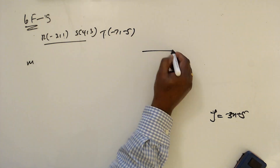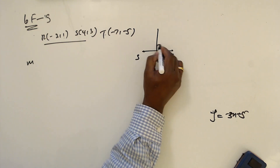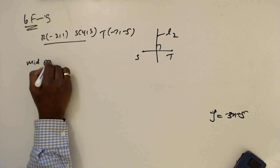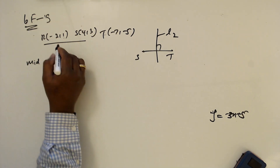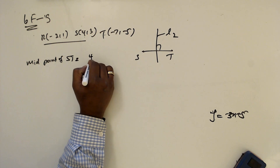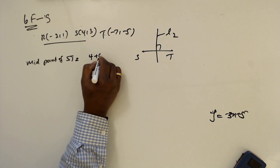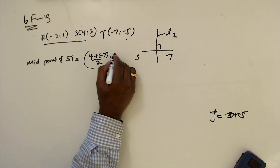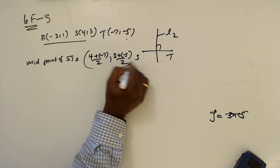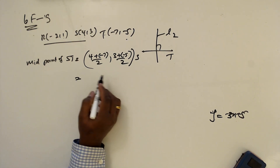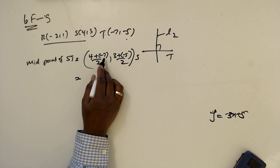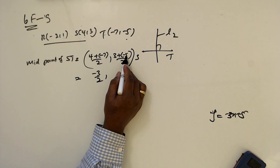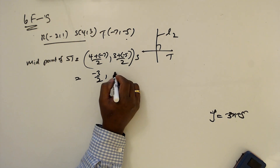Now the same process we are following for SC — this is L2. Midpoint of SC: x1 plus x2 divided by 2, y1 plus y2 divided by 2. That is 4 plus minus 7 divided by 2 and 3 plus minus 5 divided by 2. This gives minus 3 over 2 and minus 1.